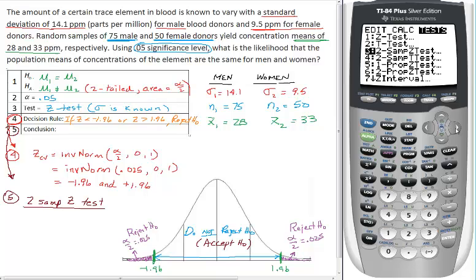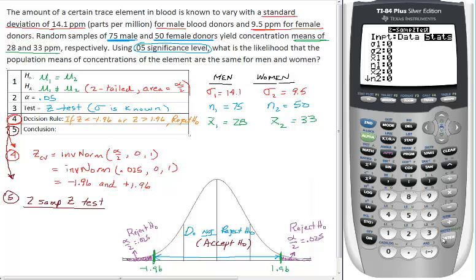Hit enter. Stats is highlighted - we don't have the individual data, so we use the stats function. First it asks for the standard deviation of the population - sigma 1 is 14.1 for men. Sigma 2 is 9.5 for women. The mean x bar 1 is 28 for men, sample size n1 is 75. The mean x bar 2 for females is 33, and sample size n2 is 50.